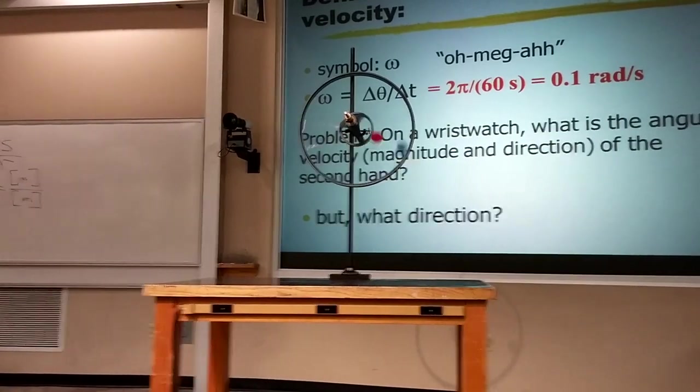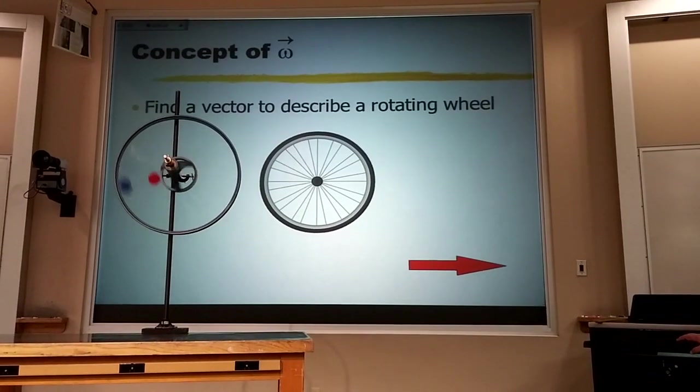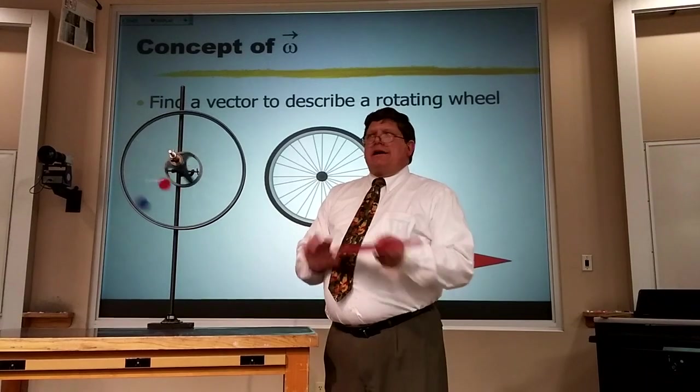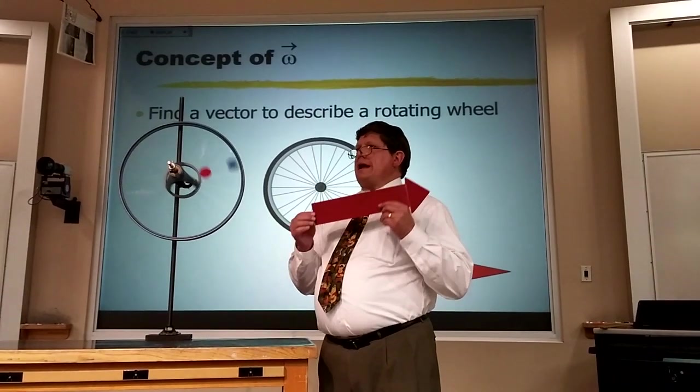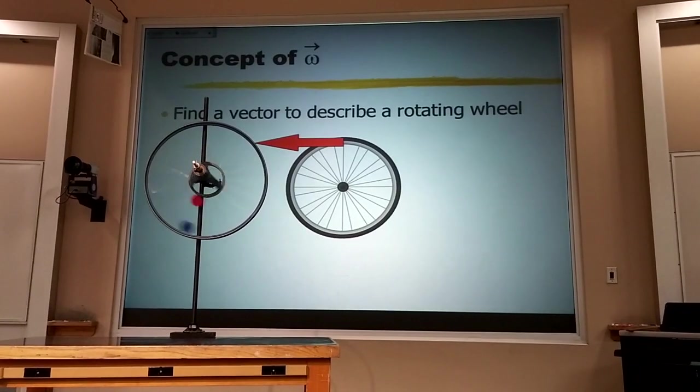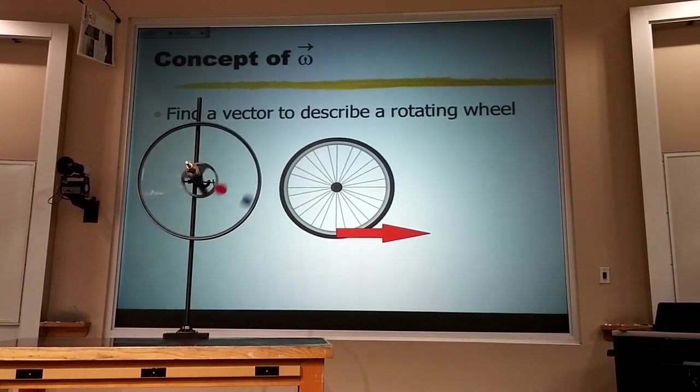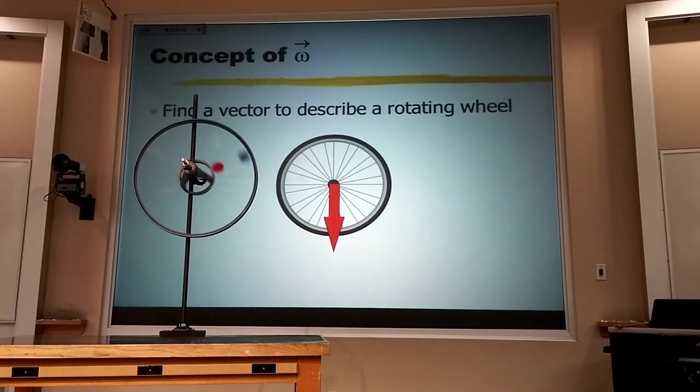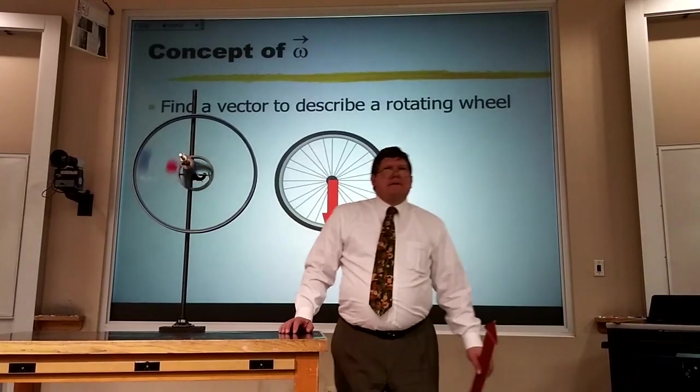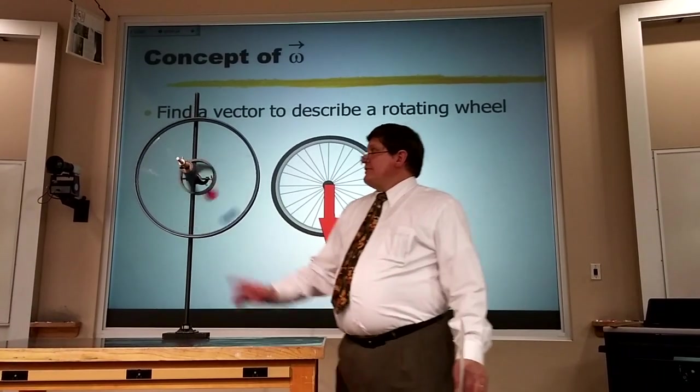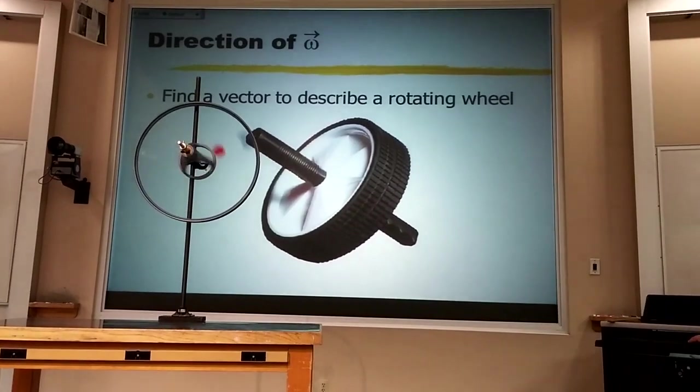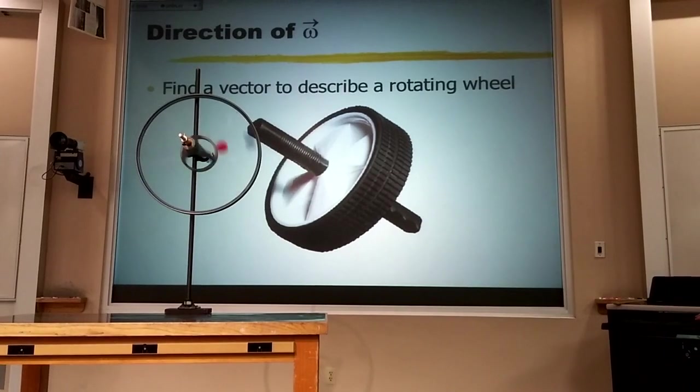Okay. The problem is that a vector cannot curve. I can't put a curved arrow and call it a vector. A vector only has one direction, and so it has to be straight. Now, if I try to use this vector to represent any part of the wheel, well, as the wheel turns, the direction is going to change. If I put it along the spokes, that direction is going to change. Every part of this wheel is changing direction as it goes round, except what? Except for the axis.